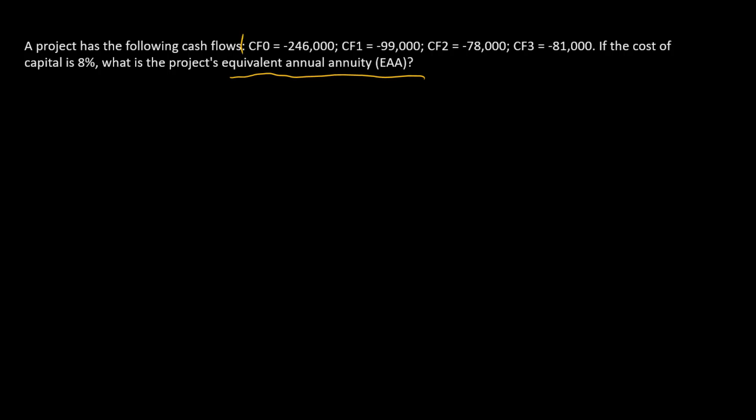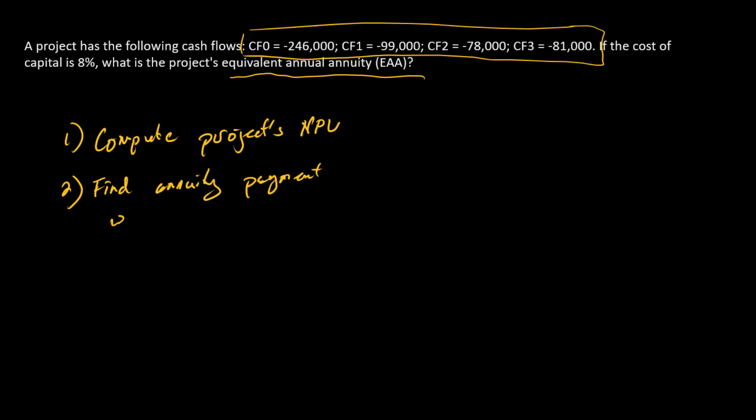And so here we have a project. These are the cash flows. First, we need to compute the project's NPV. And then second, we need to find an annuity payment with the same NPV.